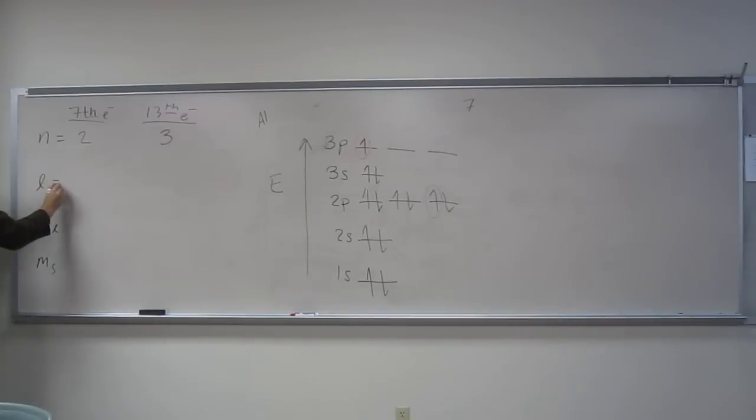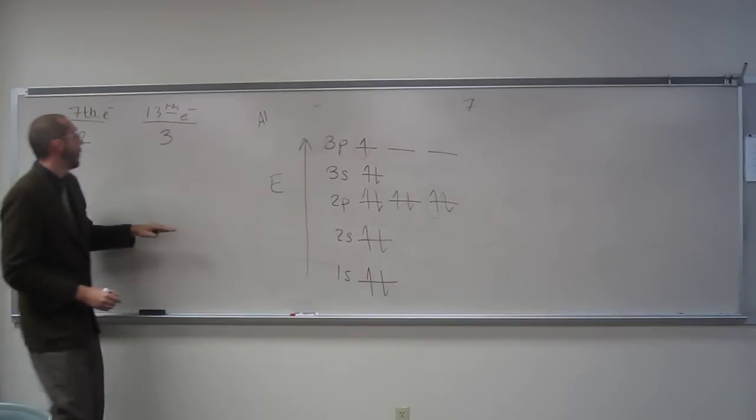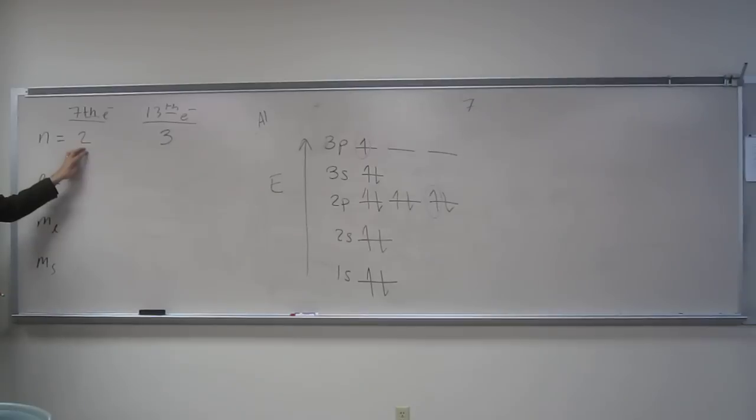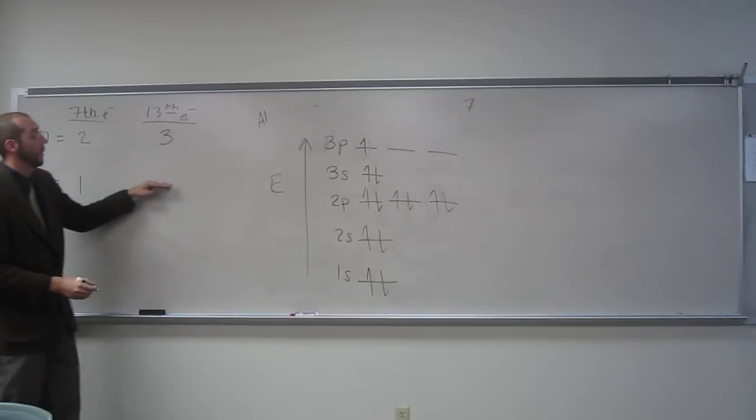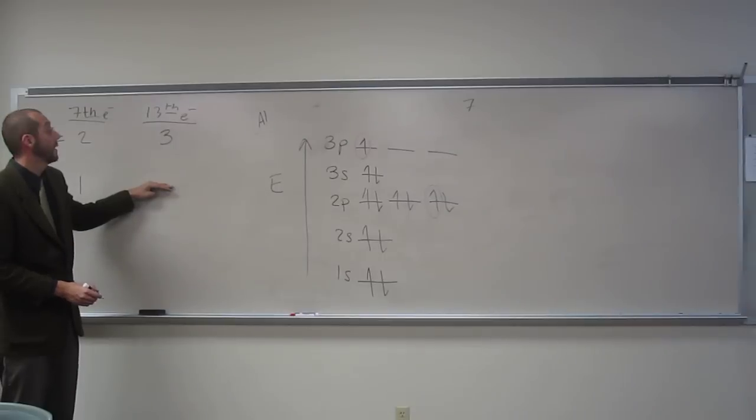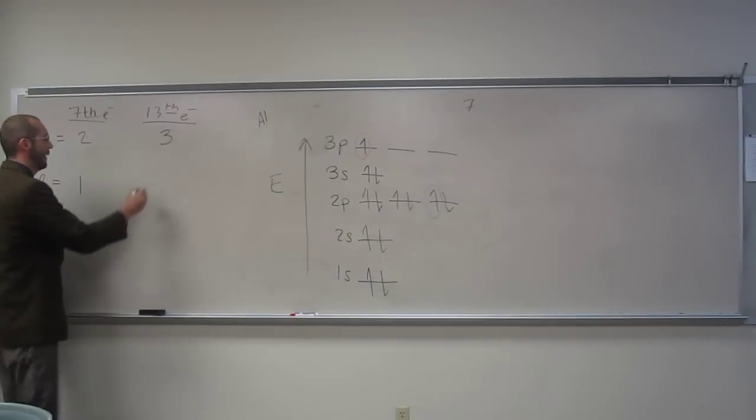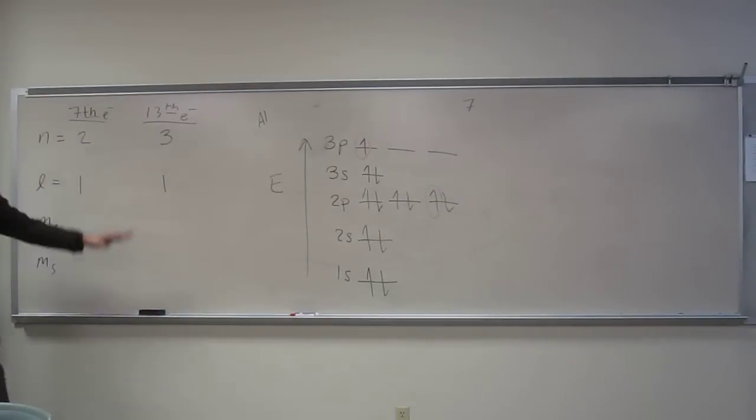What about l? So, for this one, what would it be? What would our options be? One, zero. Yeah, so one or zero, right? And this one is a p orbital, so it's one, right? And this one, what would our options be here? Two, one, zero. But since it's a p orbital, one, right? One. So, I saw that, and so I wanted to give us kind of an expanded view of that.